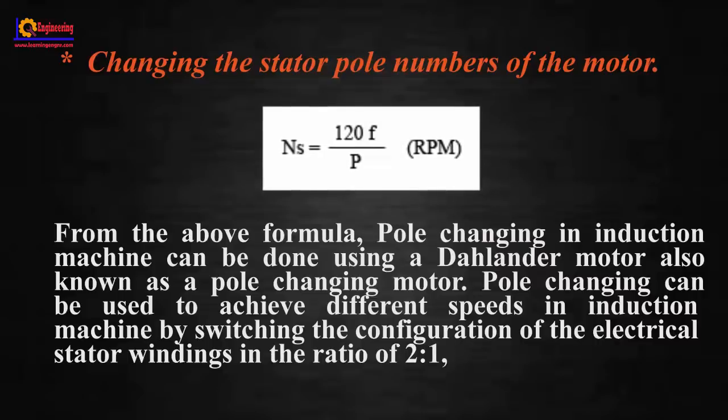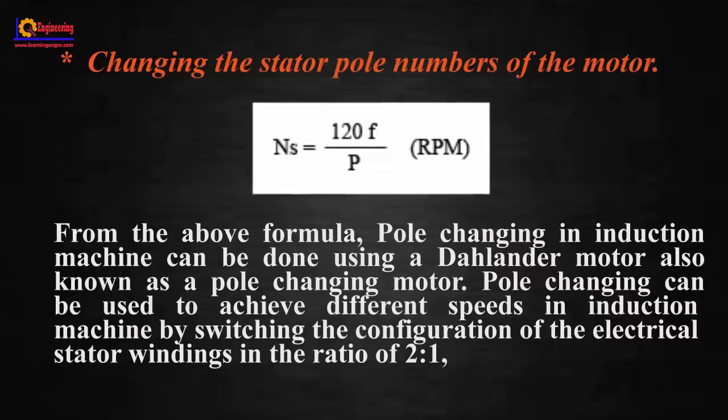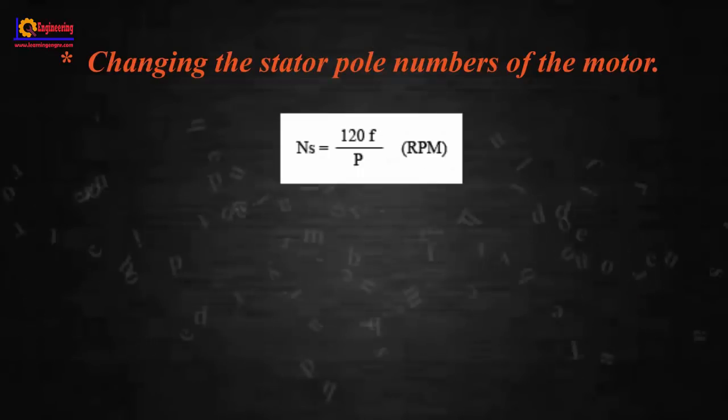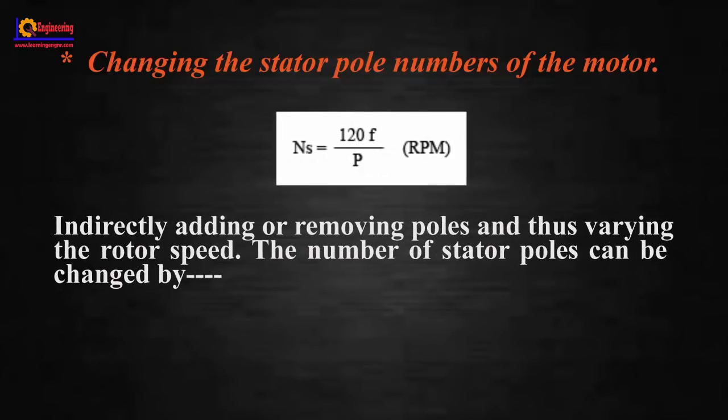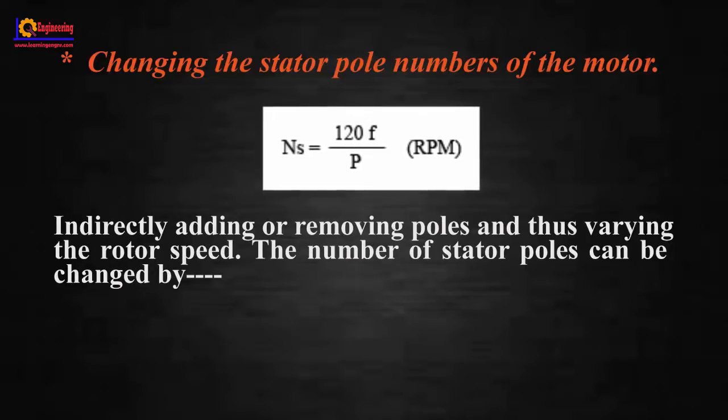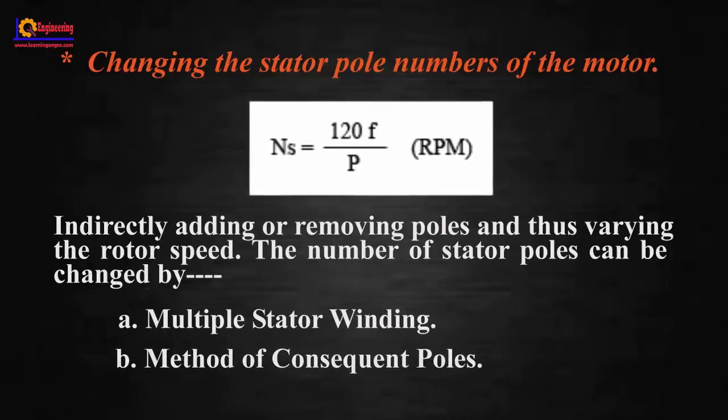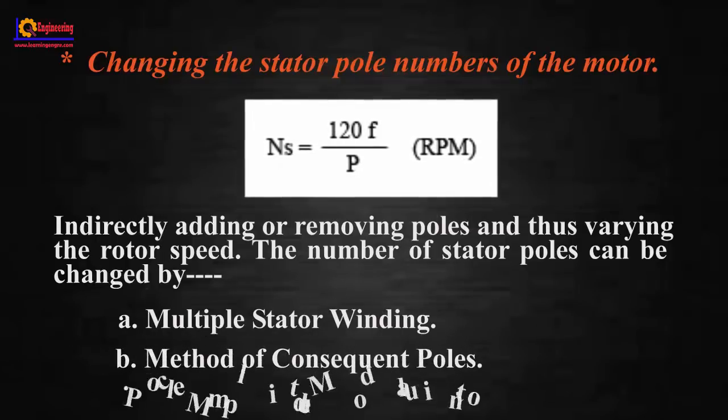Pole changing can be used to achieve different speeds in induction machine by switching the configuration of the electrical stator windings in the ratio of 2:1, indirectly adding or removing poles and thus varying the rotor speed. The number of stator poles can be changed by multiple stator winding method, consequent poles, or pole amplitude modulation.